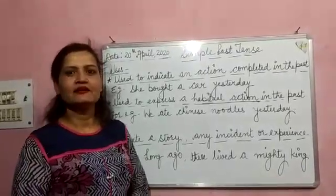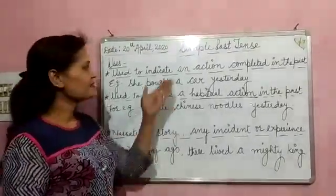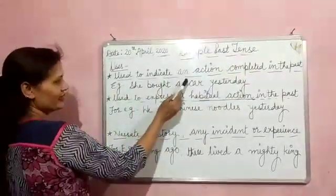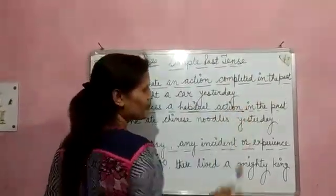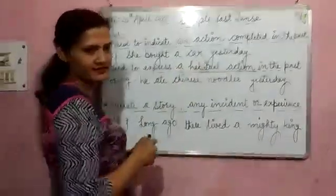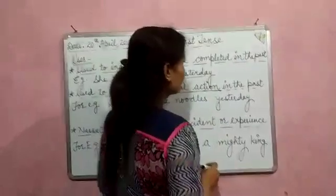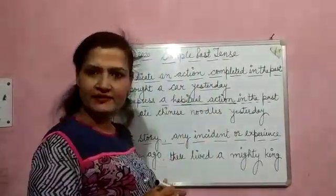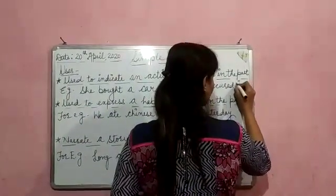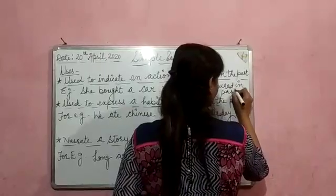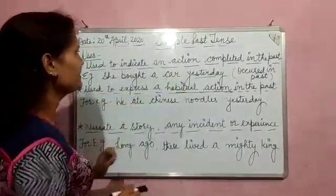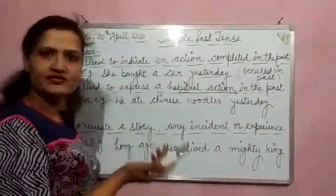We will discuss where we use simple past tense. Simple past tense is used to indicate an action completed in the past. For example, she bought a car yesterday. Here, 'yesterday' tells us the action occurred in the past, which indicates that the action is over.